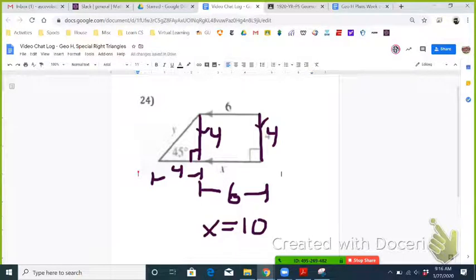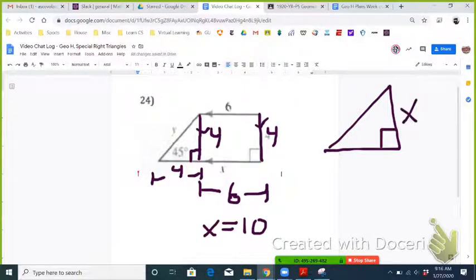And then to find Y, since that's an isosceles right triangle, all isosceles right triangles are similar.